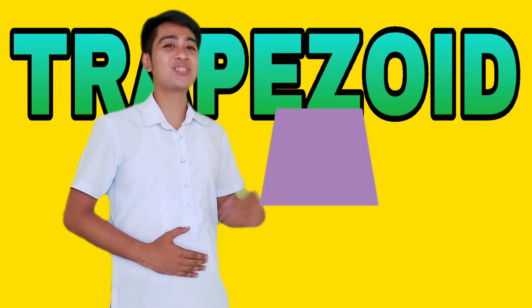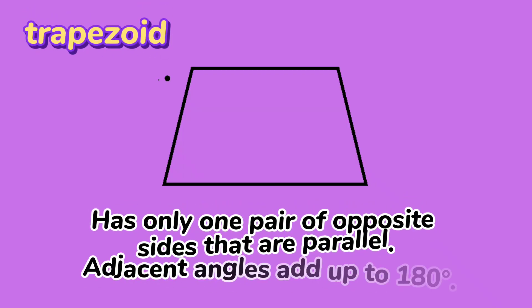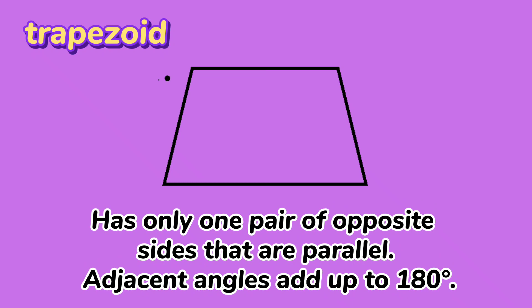The last one is the trapezoid. Trapezoid has only one pair of opposite sides that are parallel. Adjacent angles add up to 180 degrees.